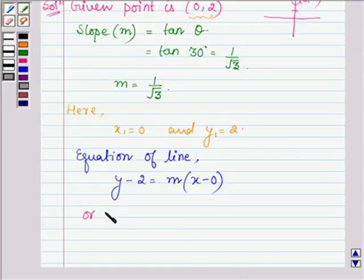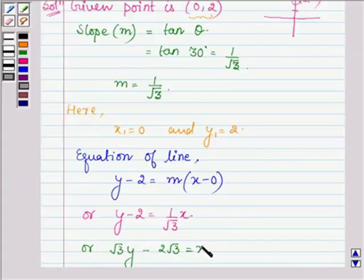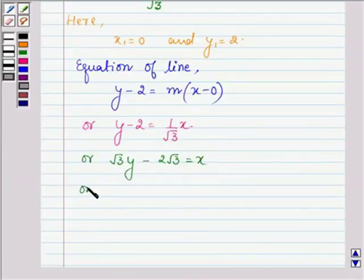So, we have y - 2 = (1/√3)x, or √3y - 2√3 = x, or x - √3y + 2√3 = 0.